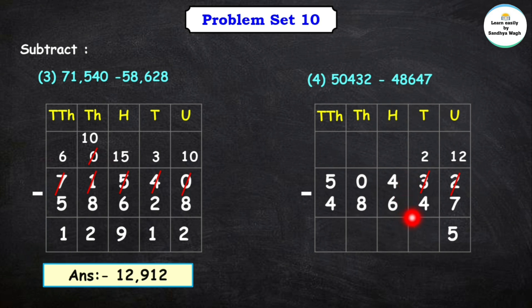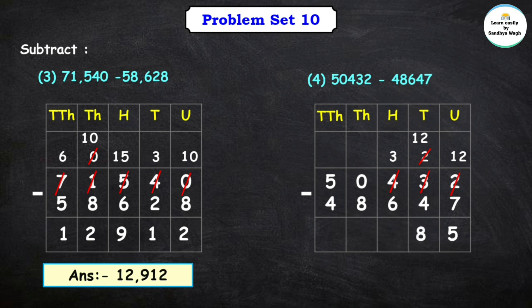In the tens place, we cannot subtract 4 from 2, so we borrow from the hundreds place. The hundreds place had 4; after borrowing it becomes 3. The tens place becomes 12. 12 tenths minus 4 tenths — the answer is 8. 12 minus 4 is equal to 8.